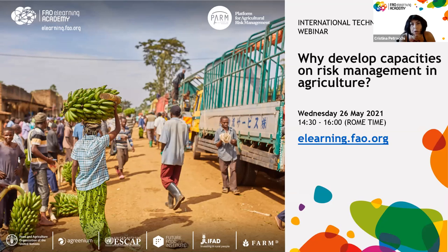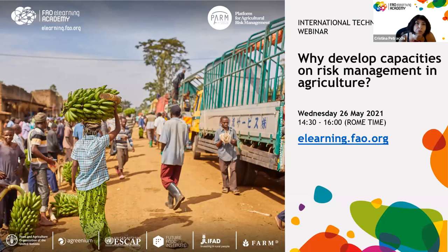Before we start, I wanted to explain what we are trying to achieve with this webinar. The webinar has the objective to raise awareness on a series of e-learning courses on agricultural risk management. These courses are available through the FAO e-learning academy and have the purpose to explain what we mean by agricultural risk management, how you assess your risks, and what tools and policies you can use to mitigate or cope with these risks.